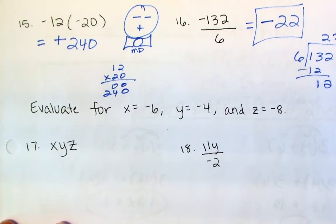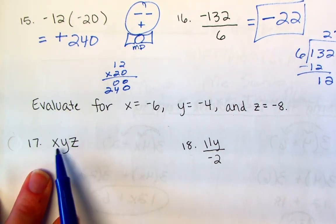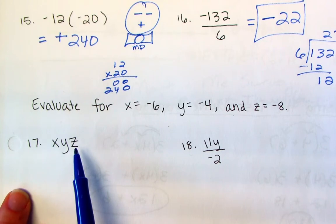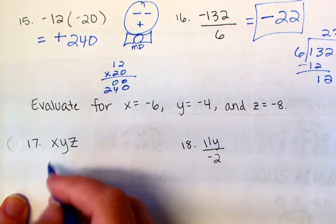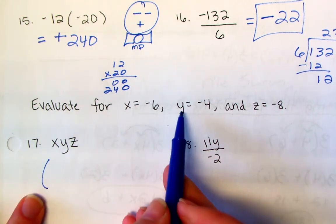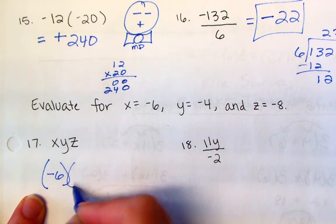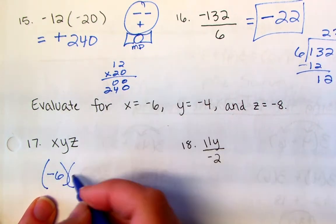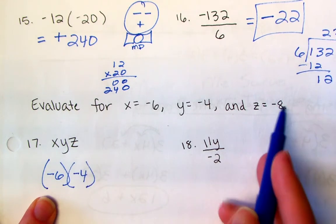And then looking at this one, I'm going to be multiplying. When variables are smacked up against each other, it's multiplication. And then I have that extra step of having to plug these in. So I'm going to substitute in, give it a little hug. So x, I'm going to substitute in negative 6. For y, I'm going to substitute in negative 4. And for z, I'm going to substitute in negative 8.